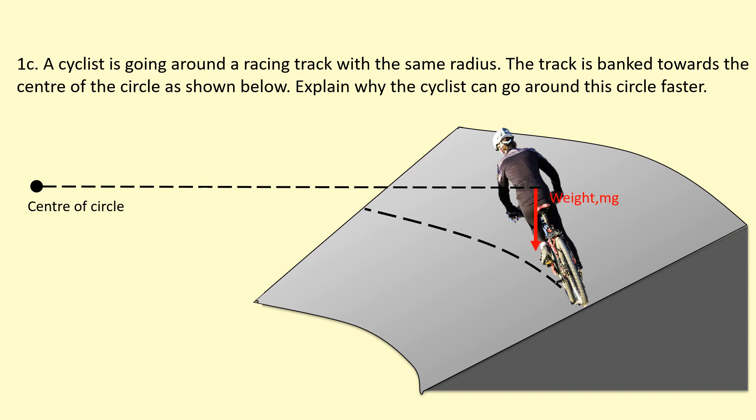We've got weight mg acting downwards, the same as before. But now the normal reaction force, which is 90 degrees to the banked surface here, is acting towards the top left. And that's what's going to make the difference here. We still have friction acting towards the bottom left here along the surface.